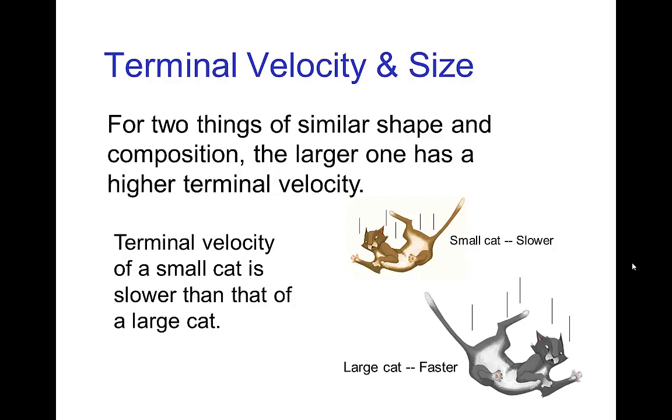Of course, the larger one weighs more, but you might also wonder, well, the larger one also has a larger area, so perhaps that compensates for the weight, but it doesn't. The larger weight of the larger cat has a more significant effect than its size, or its surface area. So it does indeed fall faster than the small cat.